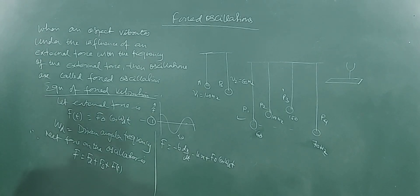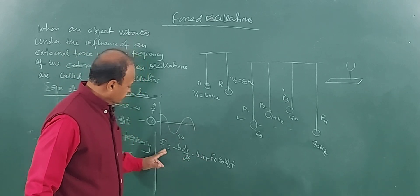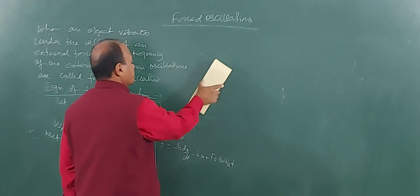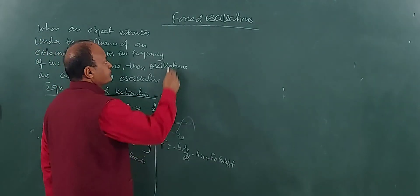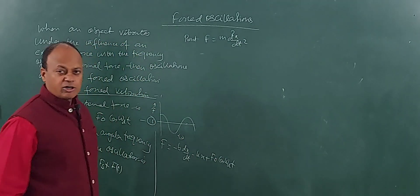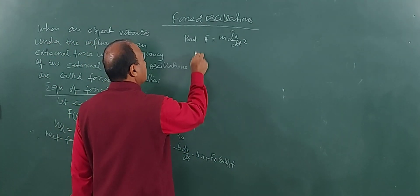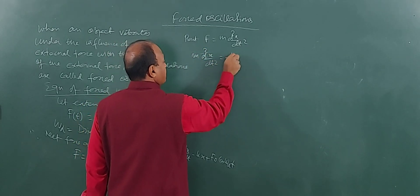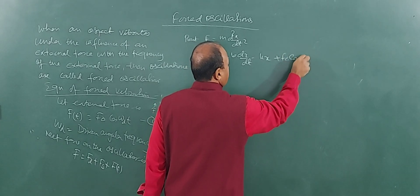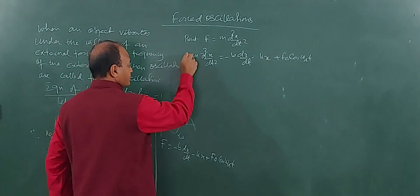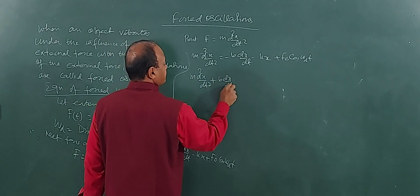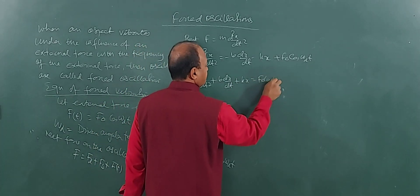Since F equals m times the second derivative of displacement, substituting: m d²x/dt² equals minus b dx/dt minus kx plus F₀ cos(ωd·t). Bringing the negative terms to the left: m d²x/dt² plus b dx/dt plus kx equals F₀ cos(ωd·t). This is equation 2 — the equation of forced oscillation.